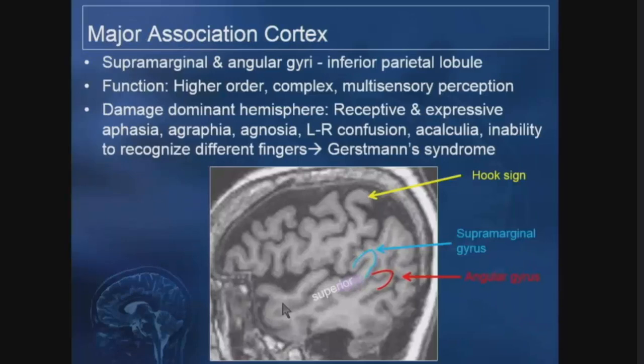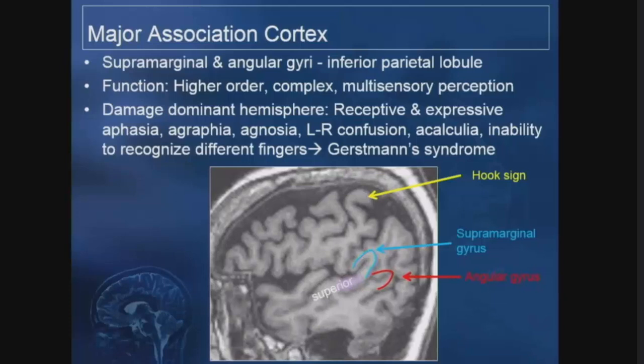One interesting area is the major association cortex — the superior marginal gyrus and angular gyrus in the inferior parietal lobule, dealing with multimodal sensory perception. Damage to the dominant hemisphere causes aphasia, because this area blends with the post-central gyrus, pre-central gyrus, and superior temporal gyrus — which is loosely where Wernicke's area is located, along the posterior aspect of the superior temporal gyrus. Damage here also impairs mathematical calculation; the inferior parietal lobule is where math ability is located — Einstein's inferior parietal lobule was reportedly 15% larger than average. Damage to the dominant hemisphere as a whole produces Gerstmann syndrome.